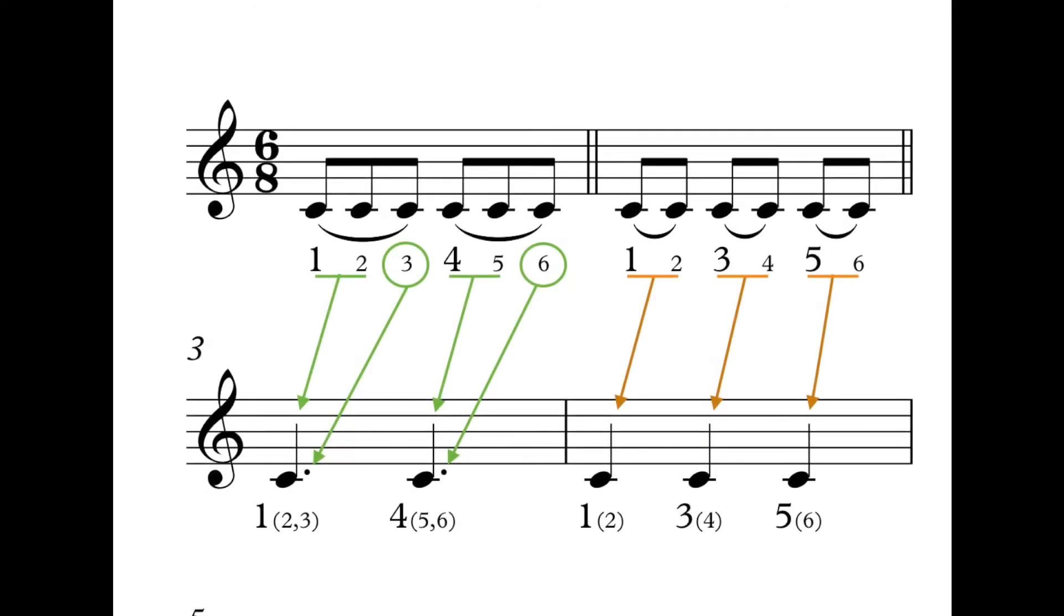So when we're using six eighth notes, we have a choice to make them into two groups of three or three groups of two. Two groups of three is going to feel better for our song. We get the strong one and the strong four.